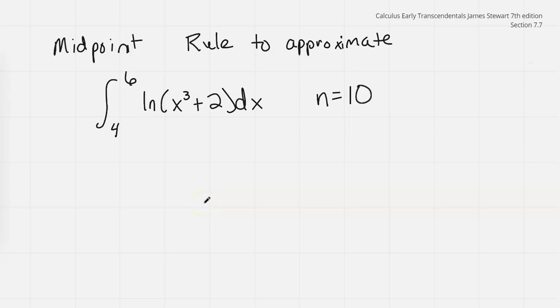Now I want to use the midpoint rule to approximate this integral of natural log of the quantity x cubed plus 2 with limits of integration 4 to 6. We're going to let n equal 10.